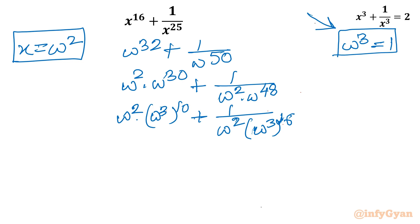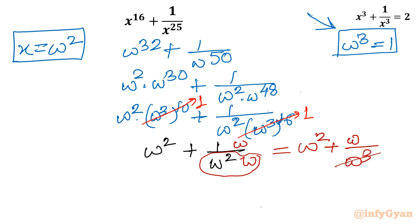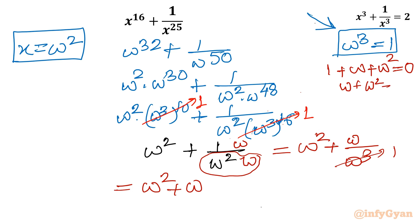Since ω³ = 1, we have ω^30 = 1 and ω^48 = 1. So the expression reduces to ω² + 1/ω². Multiplying numerator and denominator of 1/ω² by ω gives ω/ω³ = ω. So the expression becomes ω² + ω. By the second property of ω: ω + ω² = −1. So the answer for x = ω² is also −1.